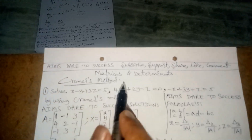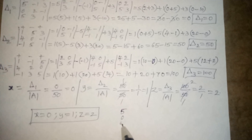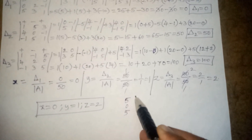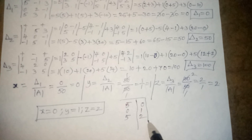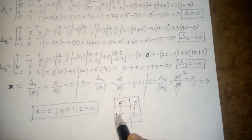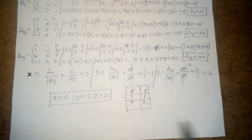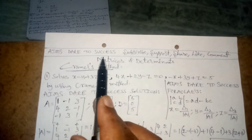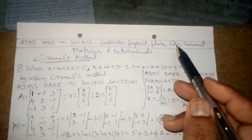For any method — Cramer's rule, matrix inversion, or Gauss-Jordan — if you have the right-hand side D = [5, 0, 5], you will always get the answer x = 0, y = 1, z = 2. Keep that in mind! Please subscribe to our channel Aims Dare to Success, share with your friends, and comment if you have questions. Thank you, my dear friends.